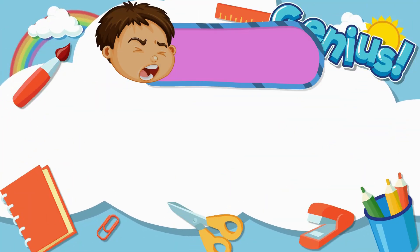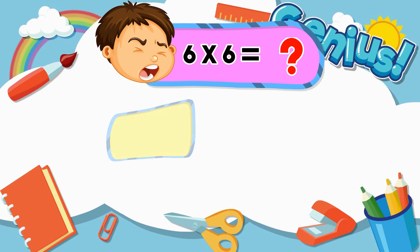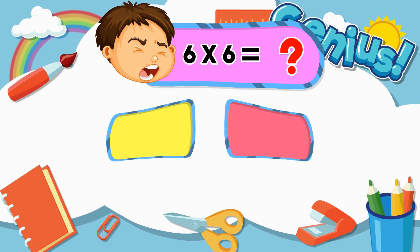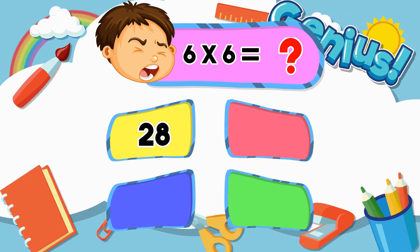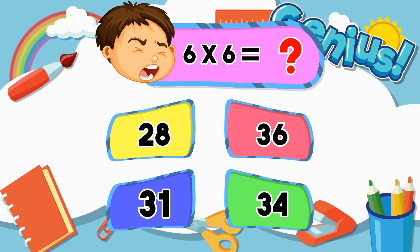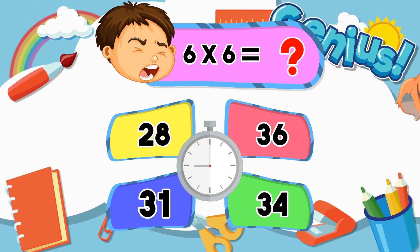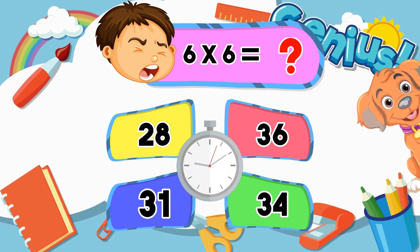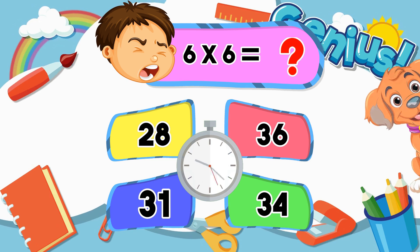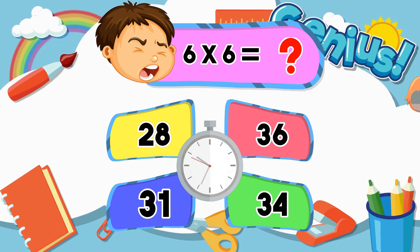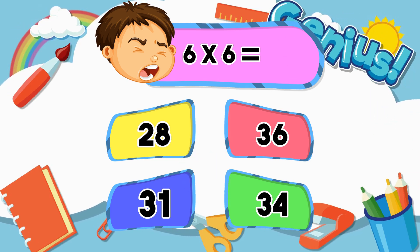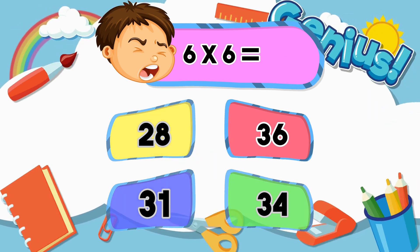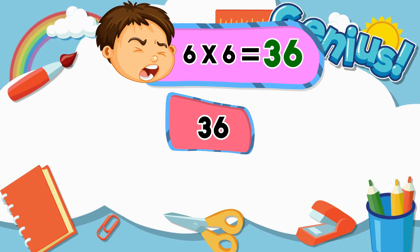What is 6 times 6? 28, 36, 31, 34. Answer: 36.